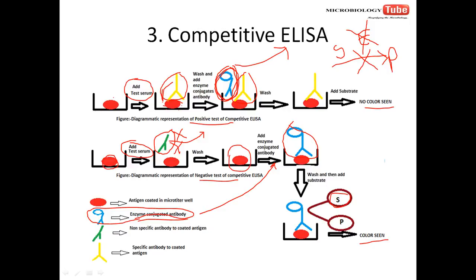An important point to note: in indirect ELISA and sandwich ELISA, a positive test shows color formation. But in competitive ELISA, if the test is positive, no color is seen. So no color means the patient is suffering from the disease in competitive ELISA. For a negative test in competitive ELISA, color formation will be present.